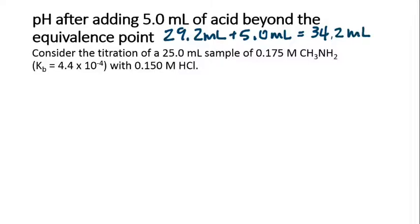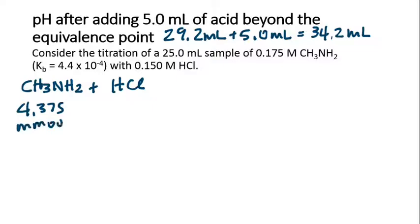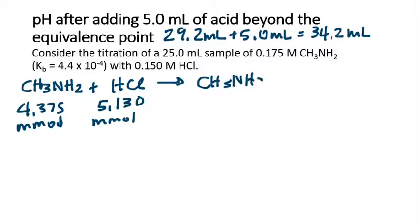Looking at our equation, there's our base and here's the acid. We still have the 4.375 millimoles of base, because we weren't adding any more. But we've added more acid, so we have 34.2 times the concentration of 0.15. We have 5.13 millimoles of acid, and these are going to react to form our salt and water.